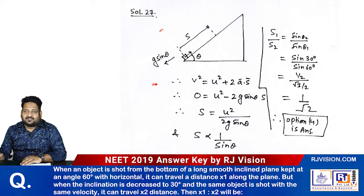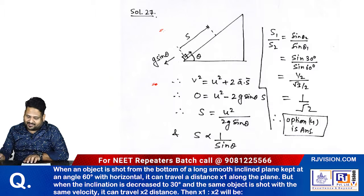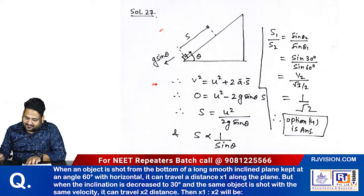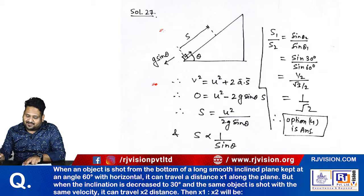NEET 2019 solution, physics question number 27. When an object is shot from the bottom of a long smooth inclined plane kept at an angle of 60 degrees, the angular inclination for the inclined plane is given as 60 degrees with the horizontal.